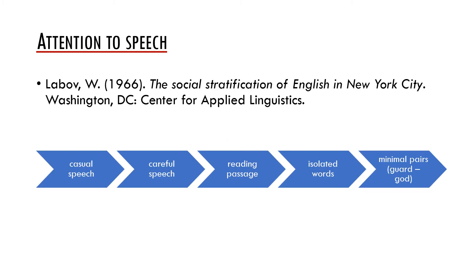In the early phases of variationist sociolinguistics, style was directly related to the attention to speech. William Labov talked about the so-called contextual styles. In his famous study on social stratification of English in New York City, he distinguished between five contextual styles: casual speech, careful speech, reading of a passage, reading of isolated words, and pronunciation of minimal pairs.